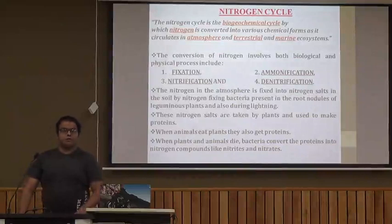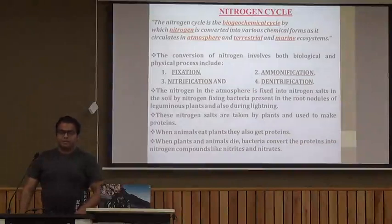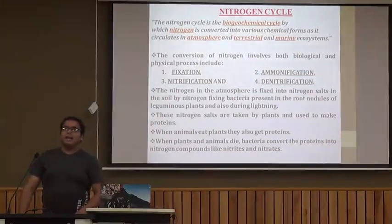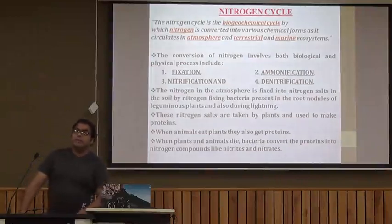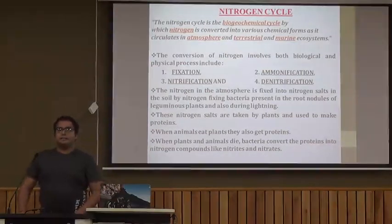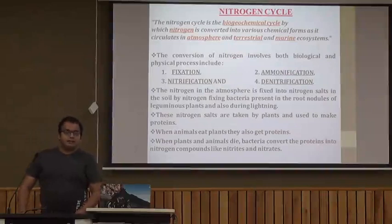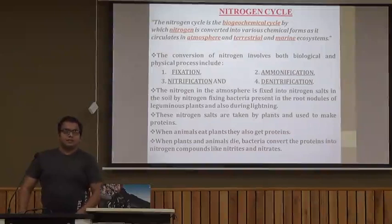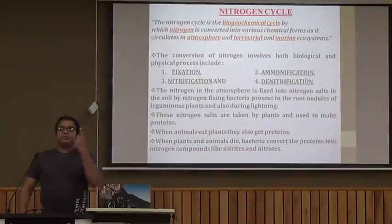The next cycle is the nitrogen cycle, which is very important for us. In this cycle, nitrogen is converted into various chemical forms as it circulates through the atmosphere, terrestrial, and marine systems. An important term to learn here is fixation. During cycles other than the water cycle, the element under study gets fixed — that is, assimilated in the body of an organism in the form of nutrients. This is called fixation. In our own body, nitrogen is fixed in the form of nucleic acids, proteins, and many other components.